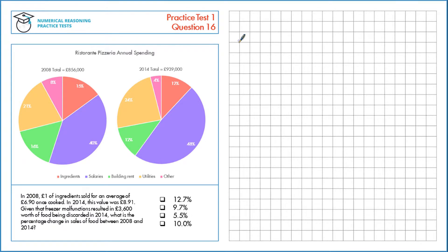In 2008, one pound of ingredients sold for an average of £6.90 once cooked. In 2014, this value is £8.91. Given that freezer malfunctions resulted in £3,600 worth of food being discarded in 2014, what is the percentage change in sales of food between 2008 and 2014?